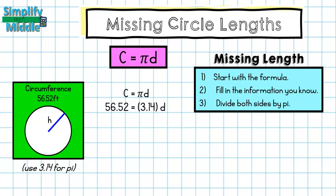And that's going to be a common theme when we are trying to find the missing diameter or radius of a circle. So I'm going to divide both sides by pi and I end up with a diameter of 18.